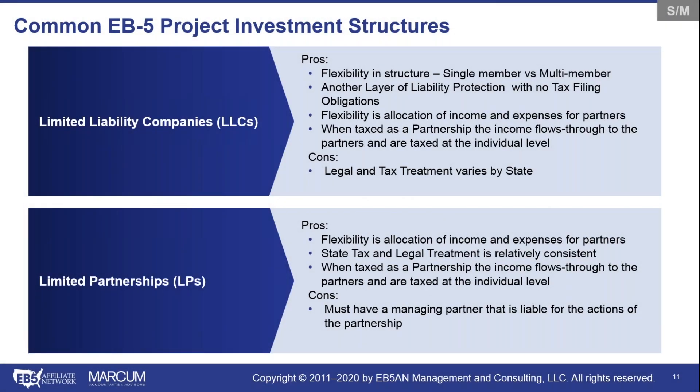In general, the two most common types of EB-5 investment structures are limited liability companies and limited partnerships. What we've seen from EB-5 over the past decade is that a majority of EB-5 deals are structured with those LPs. That's just the historical norm, and the market is more accepting of that.